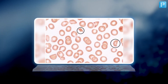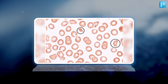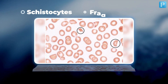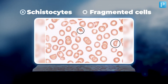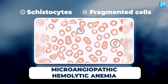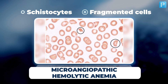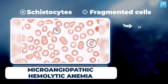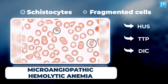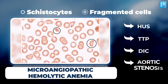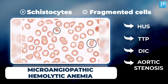And now the last image for today. Take a moment to analyze this image showing schistocytes in fragmented cells, also known as helmet cells. These findings are associated with microangiopathic hemolytic anemia, which can include conditions like HUS, TTP, DIC, and aortic stenosis. Well done if you recognized this one too.